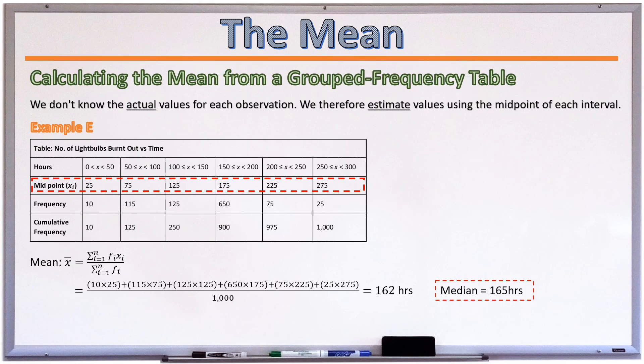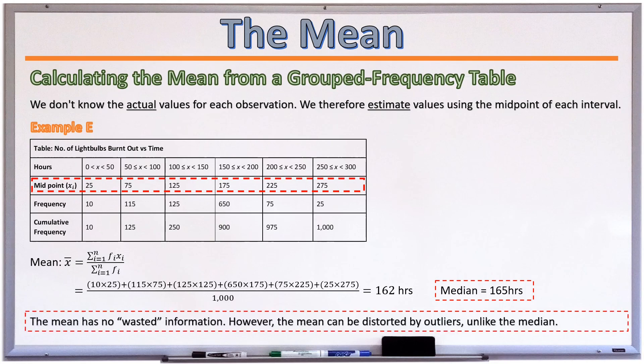So an advantage of using the mean as a descriptive tool is that it uses all of the data points in the data set to arrive at its value. There is therefore no wasted information. However, along with this advantage comes a drawback. The mean can be distorted by outliers, unlike the median, which discards potential outliers.